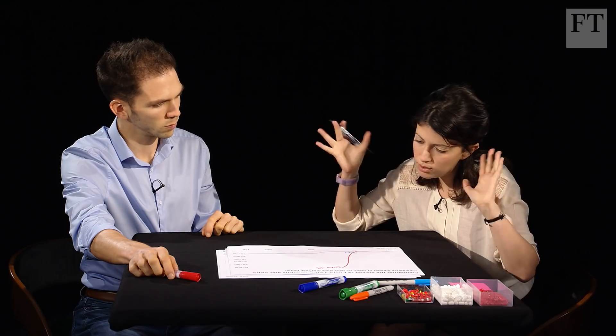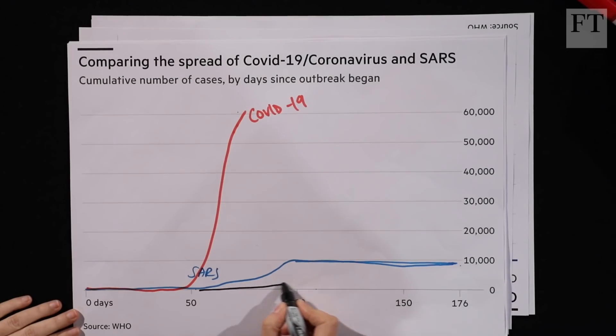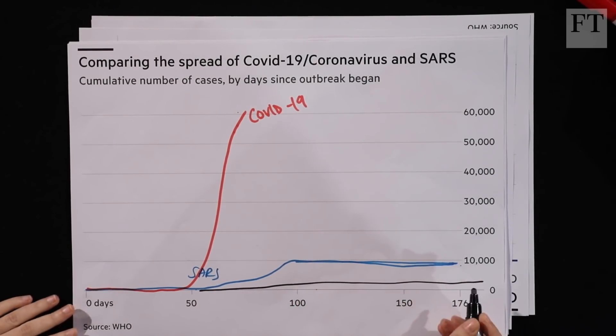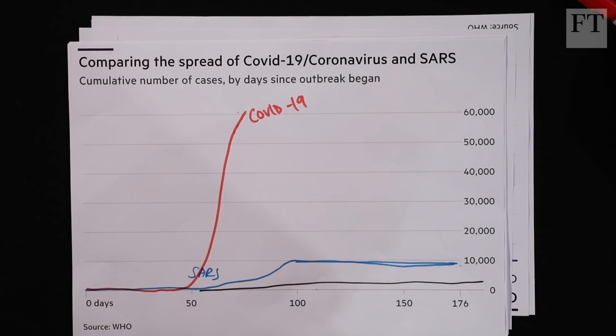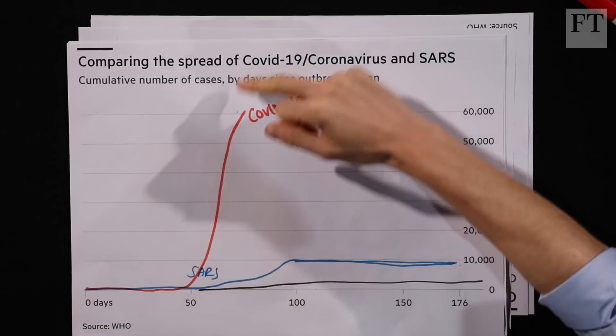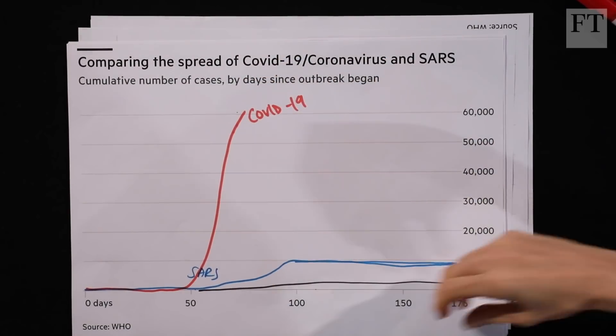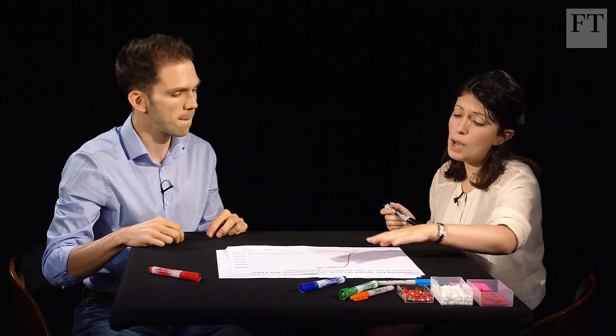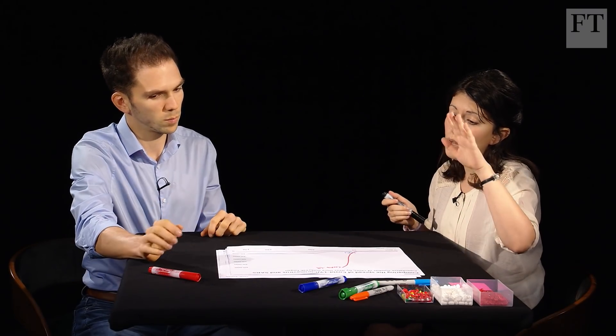Counter to the alarming case numbers, the death toll is still very low, especially compared to SARS. The mortality rate is around 2%, with deaths at around 1,500 — very low. By comparison, an estimated 60,000 people die from seasonal flu in the US alone every year.